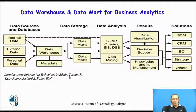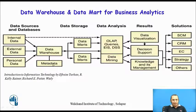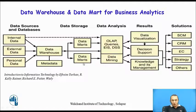This diagram shows the data mart and data warehouse. There are a number of data sources — internal data, external data, or personal data — which are stored into the data warehouse. There is also metadata, which is data about the data. Part of the data warehouse can go into the data mart, depending on the organizational structure. Some organizations have only a data warehouse, some have only data marts for important functional areas, and others have both together. All data required for analysis processing is stored in the data warehouse.